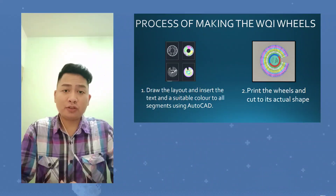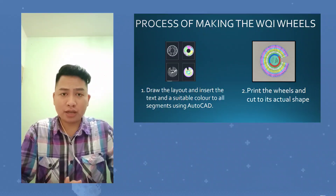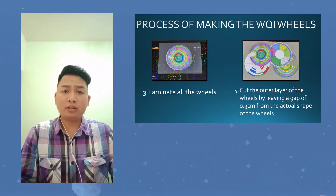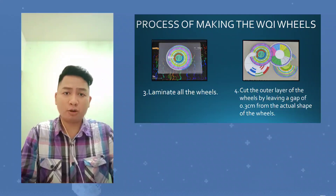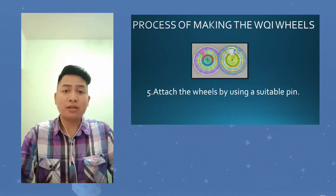The process for making the WQI wheels is: first, draw the layout and insert text and colors using AutoCAD. After that, print it out and cut it following the circular shape. Next, laminate the wheels and cut the outer layer leaving a gap of 0.3 cm. Finally, attach the wheels using a thumbtack.